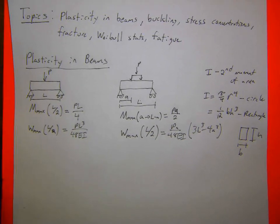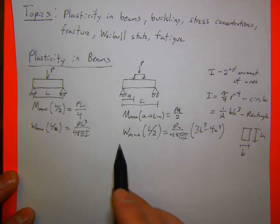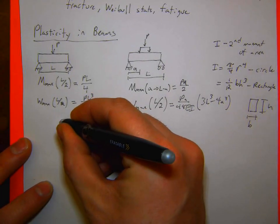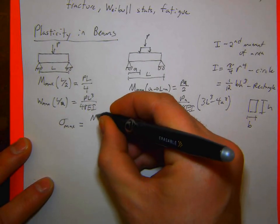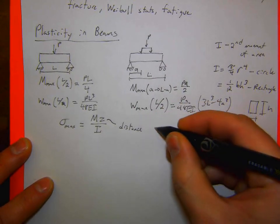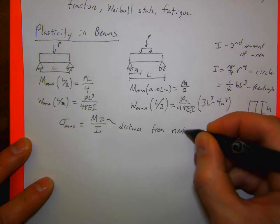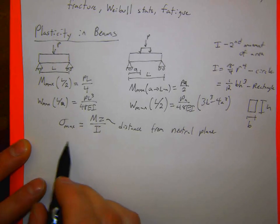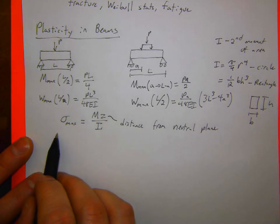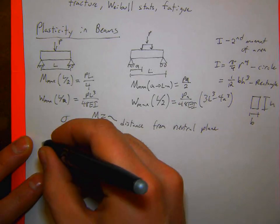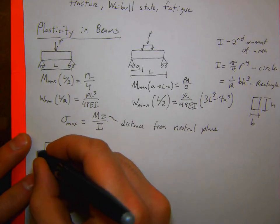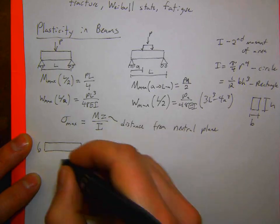That's stuff that would have been covered on the last exam. You mainly need to know it for the moment, because the stress directly relates to that moment. The maximum stress in a body is σ = Mz/I, where z is the distance from the neutral plane. We went through the derivation for why this equation is what it is.